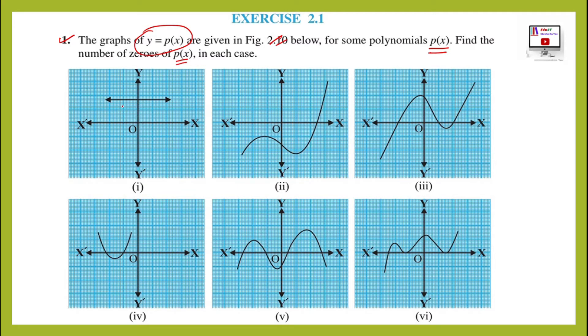If we talk about graph 1, this x-axis is not intersecting graph. We will say that the number of zeros will be 0. There is no intersecting point of this graph at x-axis. Number of zeros in this case will be 0 for graph 1.